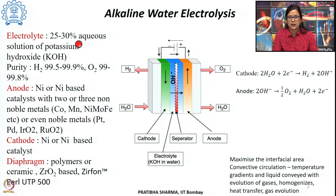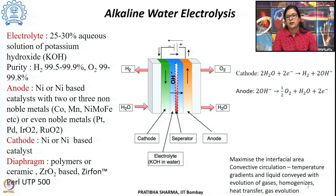The electrolyte used is a 25 to 30% aqueous solution of potassium hydroxide. The purity of hydrogen achieved is 99.5% to 99.9%, and oxygen purity is 99% to 99.8%. Since the electrolyte is less corrosive than acidic electrolysis, non-noble metals can be used.